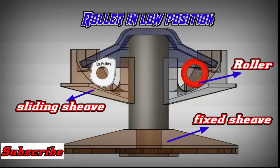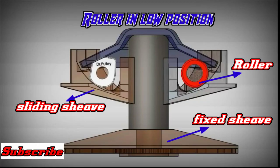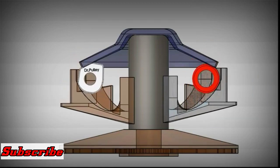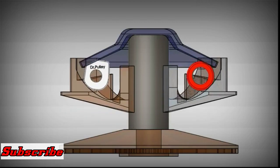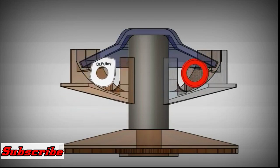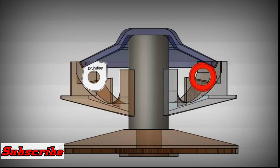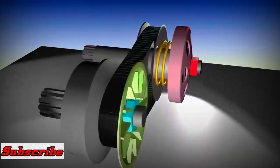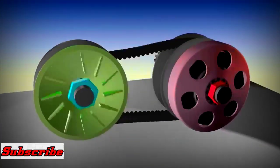At medium rotation, as engine speed increases, the ballast or roller on the front pulley starts to move outward because of the centrifugal force, and presses the primary sliding sheave towards the fixed sheave, compressing the outer circumference V-belt of the primary pulley, thereby making the diameter of the primary pulley enlarge and pulling the secondary pulley to a smaller diameter.